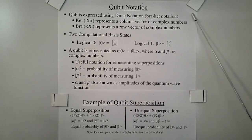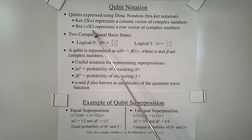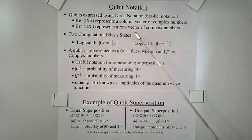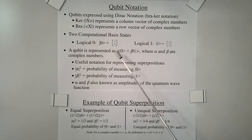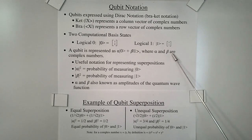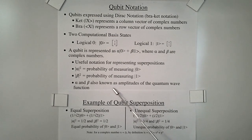So far, we've discussed quantum algorithms, which are implemented by quantum circuits, which are comprised of quantum gates. These quantum gates operate on quantum bits, or qubits. A qubit is analogous to a bit in classical computing. A qubit is expressed using the Dirac notation, or the bra-ket notation. A ket represents a column vector of complex numbers, and a bra represents a row vector of complex numbers. A qubit state space includes two computational basis states: a logical 0 or a logical 1. A qubit is represented as alpha times ket 0 plus beta times ket 1, where alpha and beta are complex numbers. This is a useful notation for representing superpositions. The absolute value of alpha squared equals the probability of measuring ket 0, and the absolute value of beta squared equals the probability of measuring ket 1. Alpha and beta are also known as amplitudes of a quantum wave function.